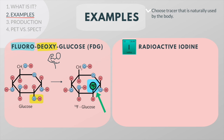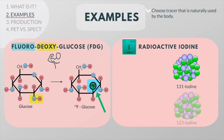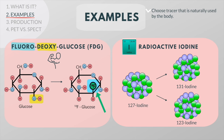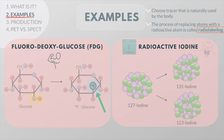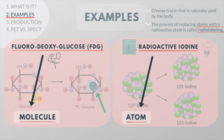Another good example is radioactive iodine — iodine-131 or iodine-123. This is a radioactive analog of stable iodine-127 and is used to diagnose and treat thyroid diseases. The process of replacing atoms with a radioactive form of the atom is called radiolabelling. The tracer can be an individual atom such as iodine, but it can also be a marked molecule such as FDG.